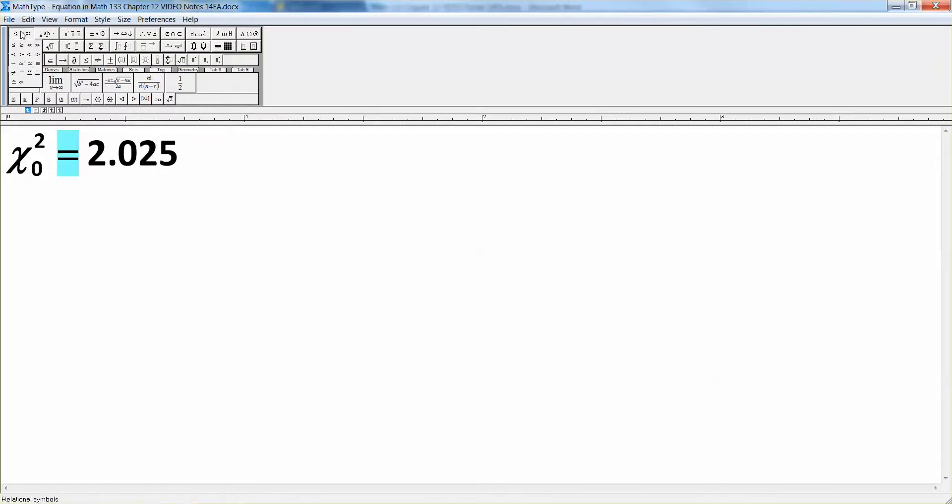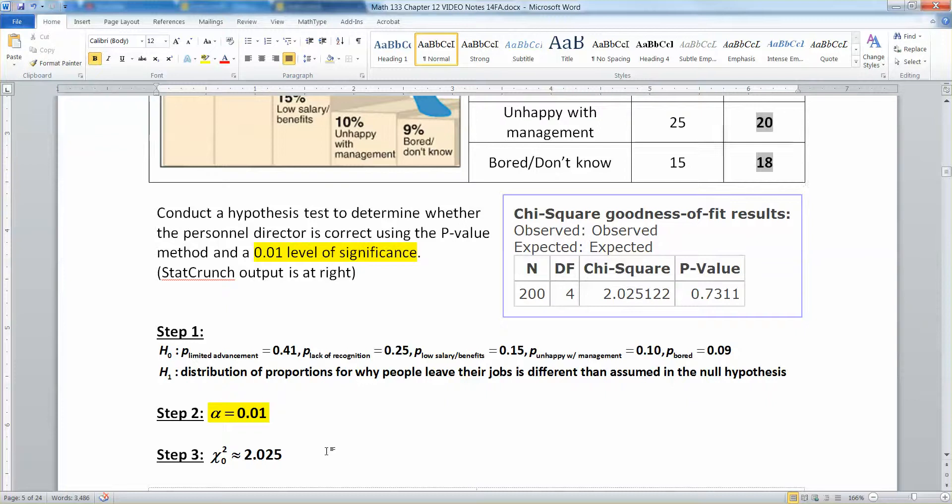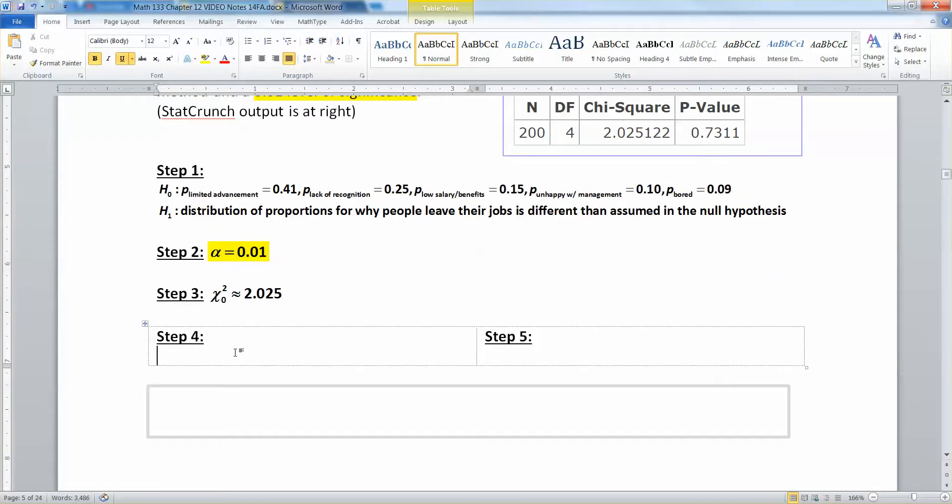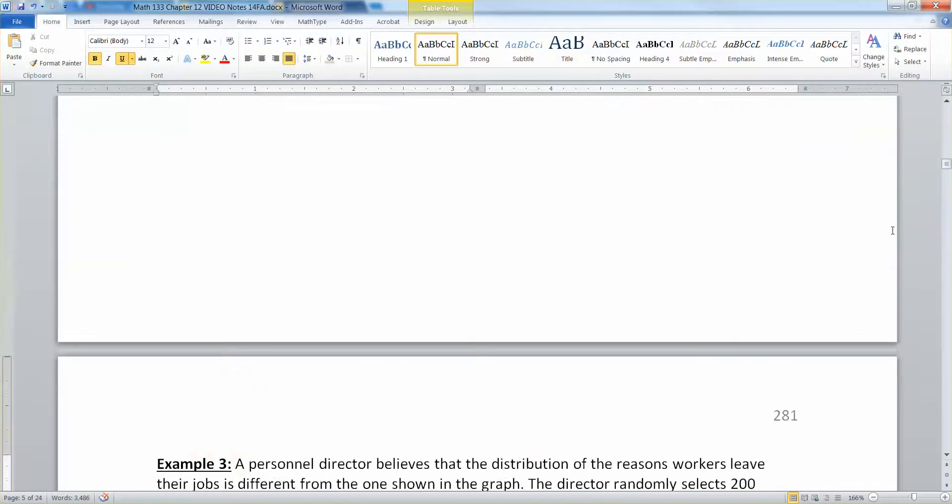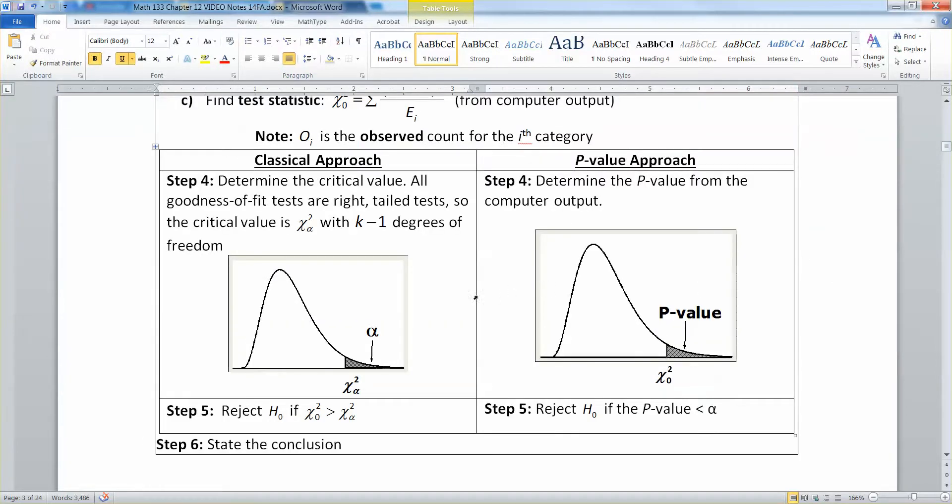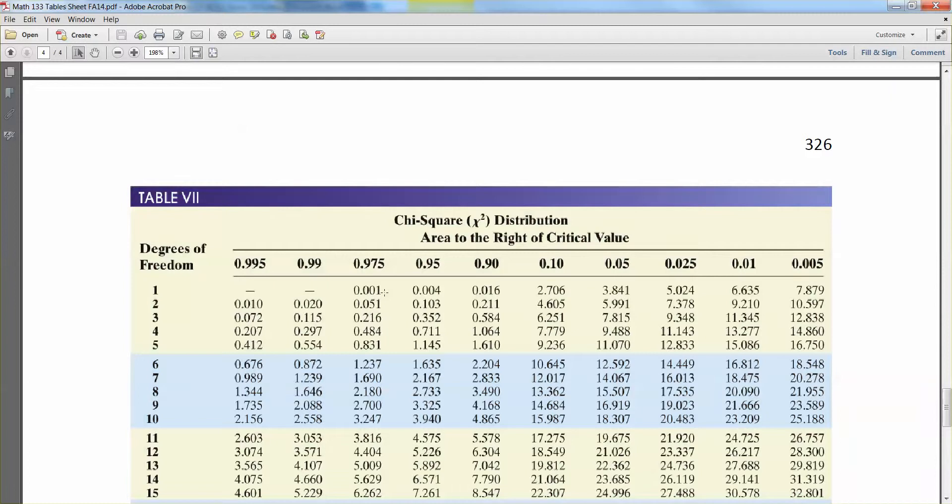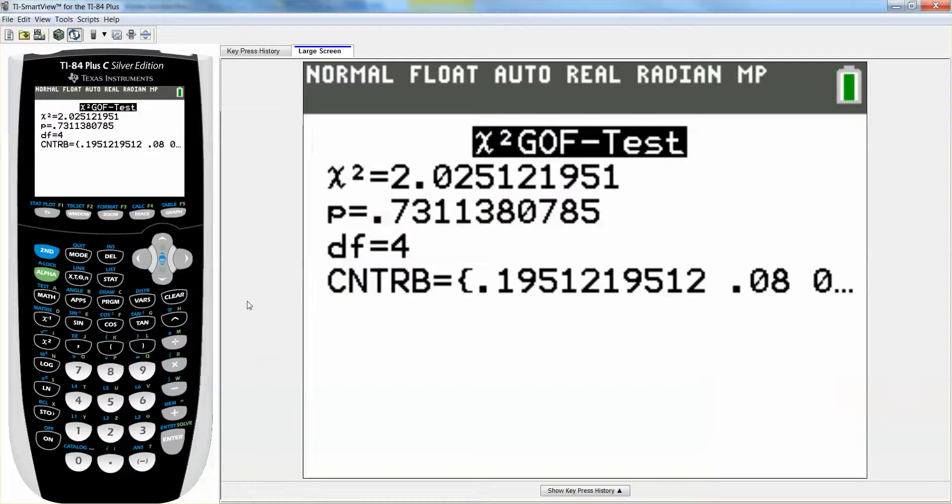Now we need to draw a picture for step four. Let me go back real quick. Remember these are always right-tailed always, with k minus one degrees of freedom. Here's the chi-square distribution table right here. If you recall, our degrees of freedom is number of categories minus one, which is four. When you look at this table, remember there's that line down the center. 2.025 is closer to these numbers on the left than it is to these numbers on the right. That means 2.025 is over on the left-hand side.